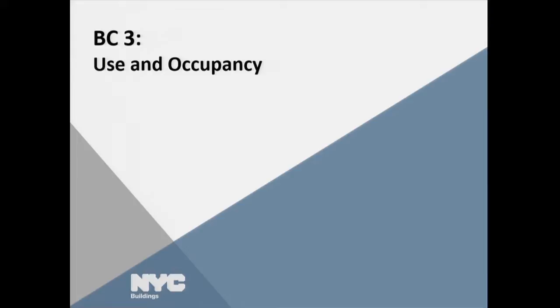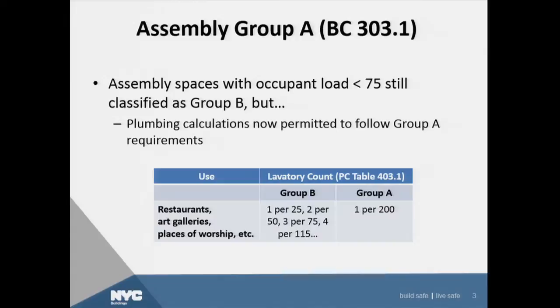Use and occupancy has pretty much been the same in the 2014 code as it was in the 2008 code, but there are a couple of key changes. The first is a very nice change in assembly spaces. In the 2008 code, if it was less than 75 people but still classified as an assembly space, we would have to classify it as occupancy group B, a business. Confusion arose as to what to do with the fixtures, so we clarified that in the new code. Now you actually have a choice between using the assembly group or the business group occupancy to determine the number of toilet fixtures.